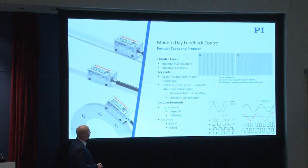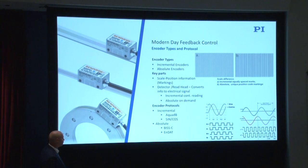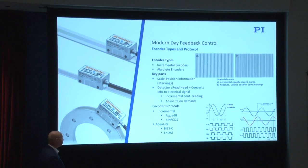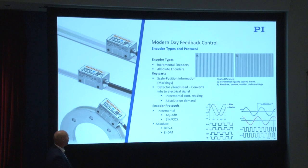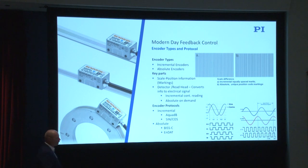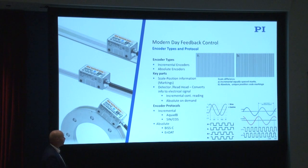For incrementals, we see A quad B or square wave encoders, and another output is sine and cosine — also called amplified sine. The cosine signal looks like a sine wave, and the digital signal is the square wave. With sine cosine, you use an interpolator which chops up the sine wave into discrete steps to get a digital output. For absolute encoders, the two most common protocols we use are BiSS-C, liked by companies such as Renishaw, and EnDAT from Heidenhain, though it really comes down to what the control system can read.